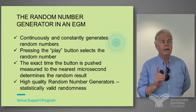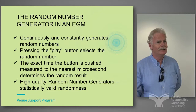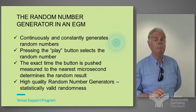The exact time the button is pushed determines that random result, and as said, it's a million a second. So if someone was sitting at a machine that you were sitting at an hour ago and they got a jackpot, it would be most unlikely that if you'd stayed there you would have got the jackpot.